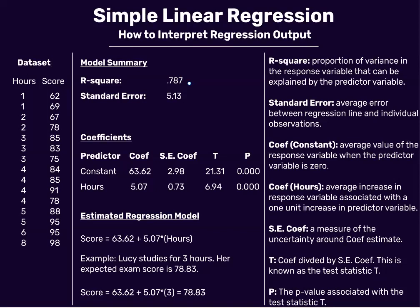Another metric to be aware of is the standard error — this is the average error between the regression line and individual observations. For example, the average distance between the regression line and an individual observation for this data set might be 5.13. The lower this number, the more closely the regression line fits the individual observations, so lower is better.